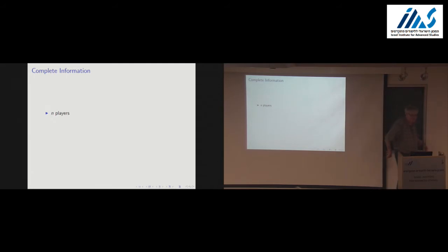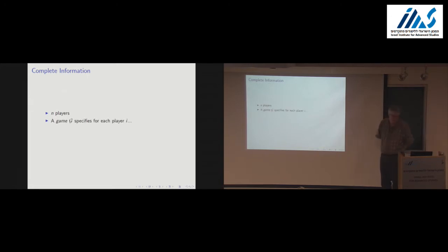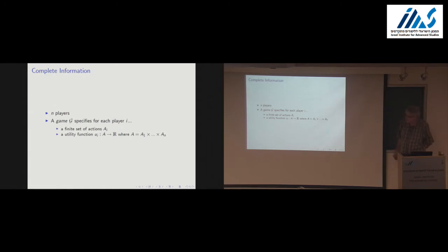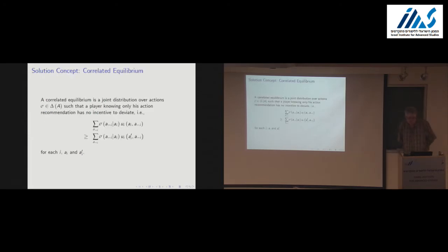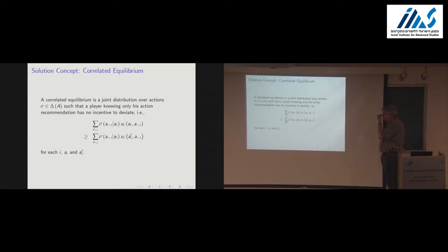A complete information game: we have n players. For each player i, there's a finite set of actions and a utility function. I'll keep using the notation that whenever I have subscripted actions for each player, I write capital A for the product set. I'm going to assume that you're familiar with Nash equilibria, so let's talk about correlated equilibrium.